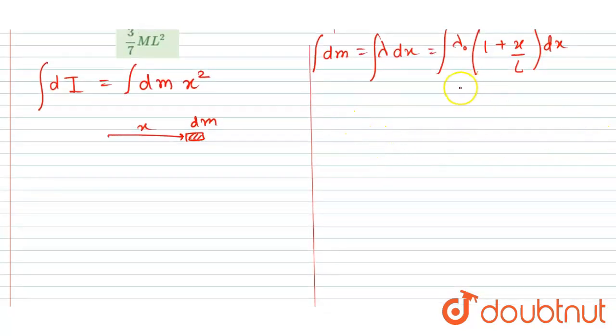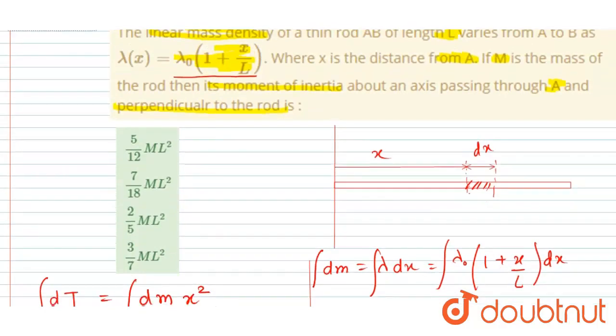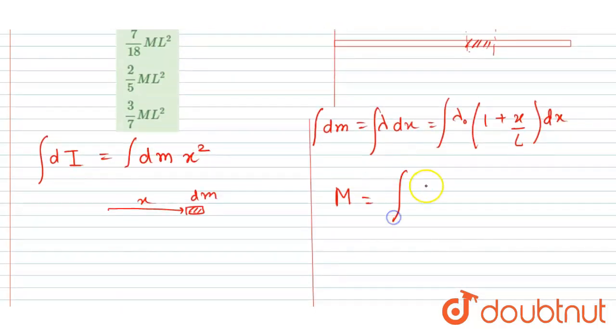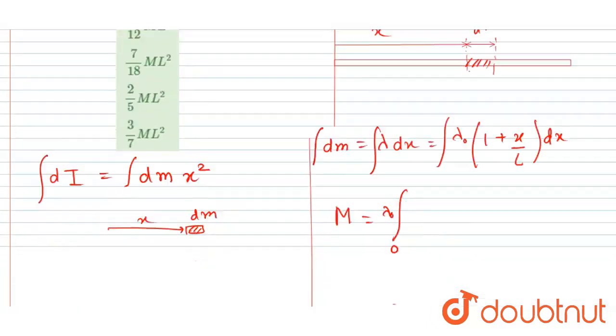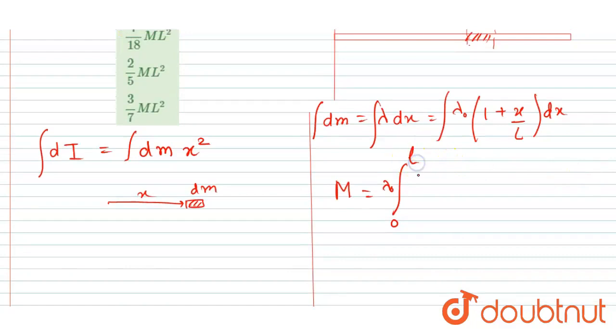So let's write down, let's integrate the mass first. The mass is capital M, it is given in the question. So this mass equals to, I took lambda naught outside and X is varying from 0 to L, and here I will write DX plus integration X by L DX from 0 to L, and the whole expression is multiplied by lambda naught.